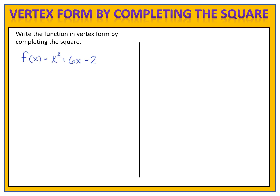Here's the function: f of x equals x squared plus 6x minus 2. We're going to employ the process of completing the square to put the function in vertex form. We begin by writing f of x, copying everything down from the original function with two exceptions. We write x squared plus 6x, plus a mystery box, minus 2 from the original, minus the mystery box. We have a plus mystery box and a minus mystery box.